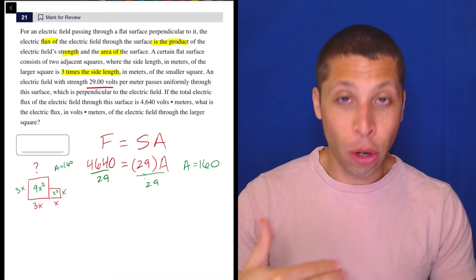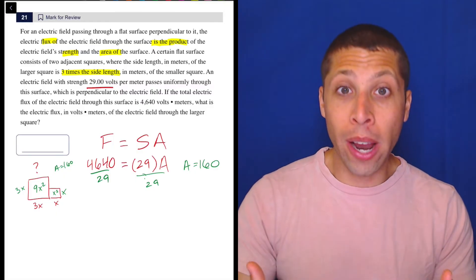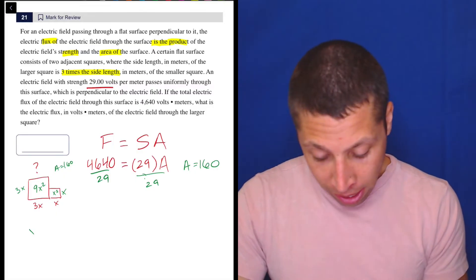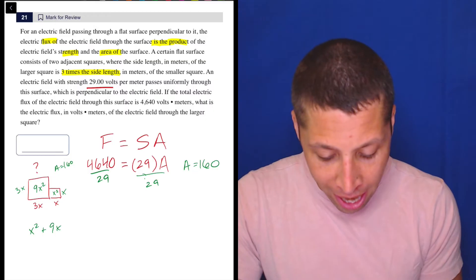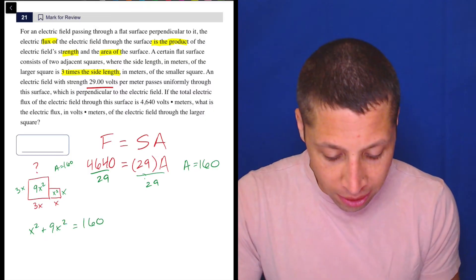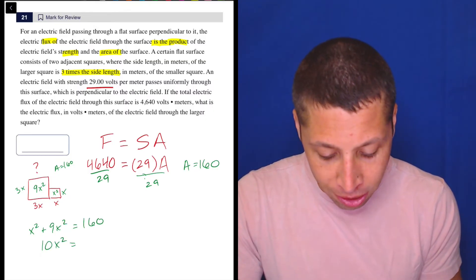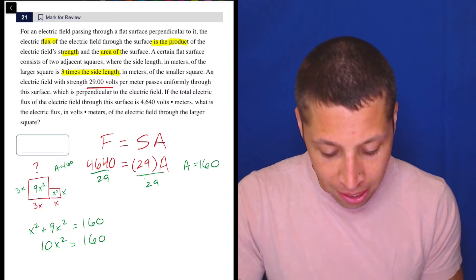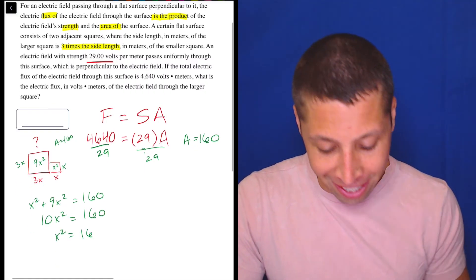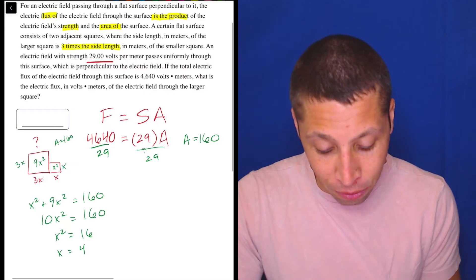So if the area is 160 and there's two squares, let's add them together. X squared plus nine X squared is 160. 10 X squared is 160. X squared is 16. So that means X is four.